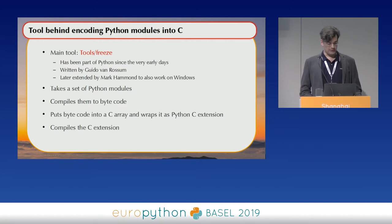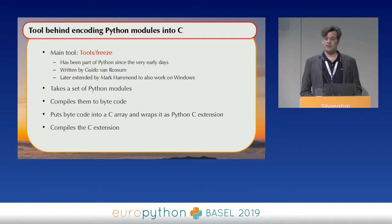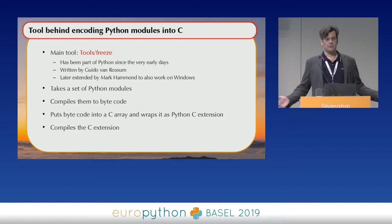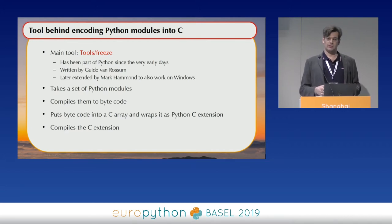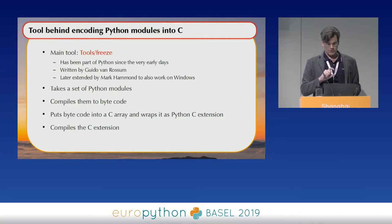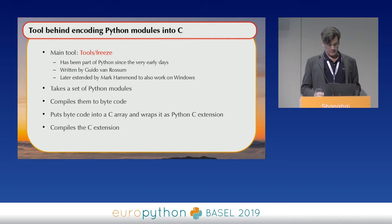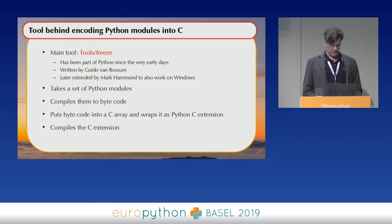It was written by Guido himself. Later, Mark Hammond extended it to also work on Windows. Nowadays it's used for importlib, because for importlib you have this bootstrap problem: if you want to run Python, you first need to get the Python code from somewhere, and importlib is written in Python. So a core part of importlib is actually frozen into Python as well. When I started to write PyRun, the freeze tool was not maintained anymore, so I had to do some fixes to make it work again.